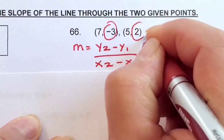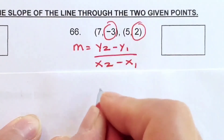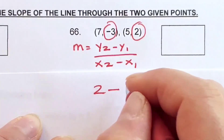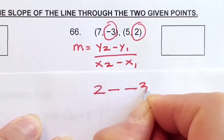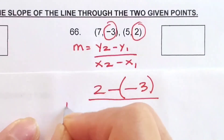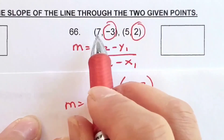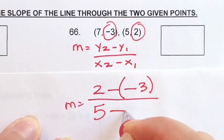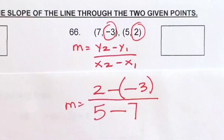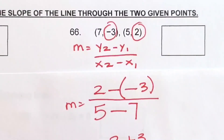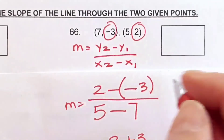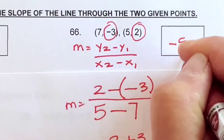Number 66: I've written out the slope formula — just need to plug in. Circling the y's: y2 is 2, y1 is negative 3. So 2 minus (negative 3), which is like 2 plus 3. Then x2 is 5 minus x1 which is 7, giving 5 minus 7 equals negative 2. So we have 5 over negative 2 — the slope is negative 5 over 2.